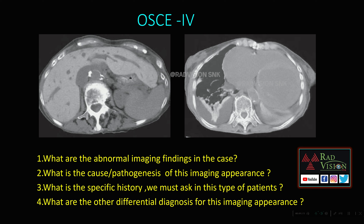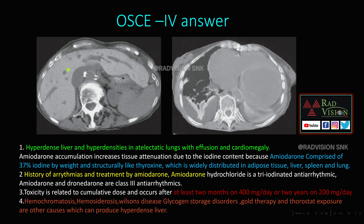The next case, OSCE 4: the abnormal imaging findings show a hyperdense liver clearly seen when compared with the spleen on non-contrast CT. There is also hyperdensity in the lung with atelectasis, pleural effusions, and cardiomegaly. This is classically seen in amiodarone toxicity — amiodarone accumulation increases tissue attenuation due to its iodine content, as amiodarone is composed of 37% iodine by weight, is structurally similar to thyroxine, and is widely distributed in adipose tissues, liver, spleen, and lung.